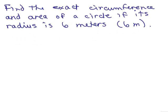Find the exact circumference and area of a circle if its radius is 6 meters. For meters, we could just write m. So circumference - what do we do? We double the radius, so that's going to be 12 times pi.